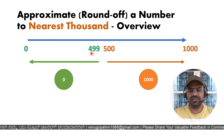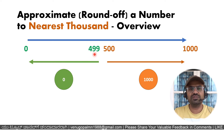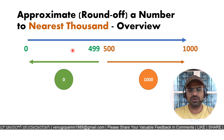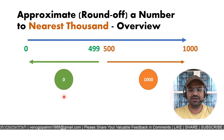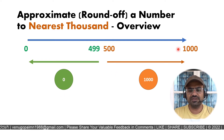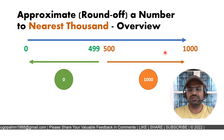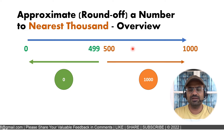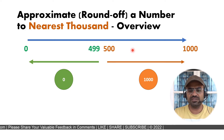If the last three digits are 0, 1, 2, 3 — all the way till 499 — that number is closer to the previous thousand. Between 500 and 1000, if the last three digits are 500 or more, you round up to the next thousand.